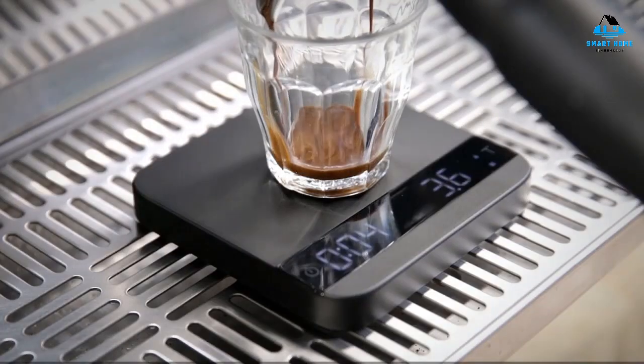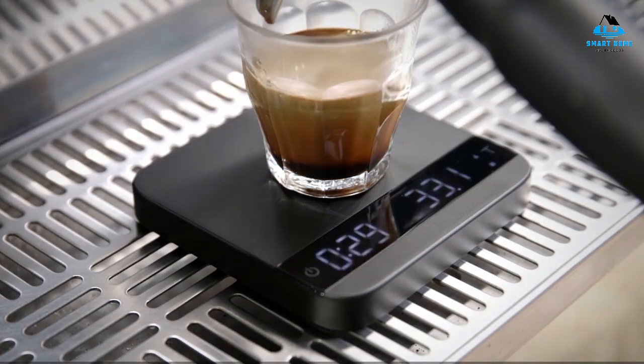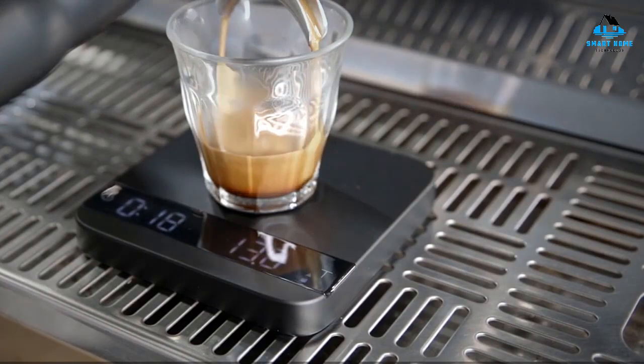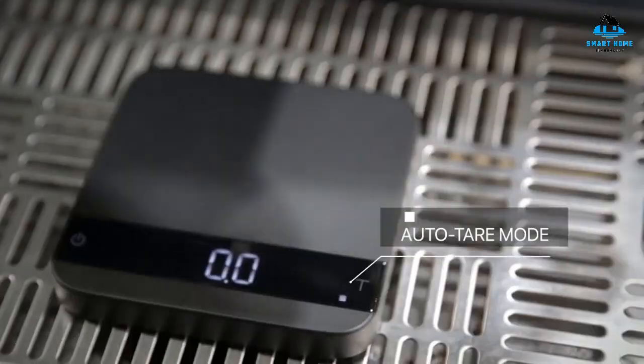The Acaia Lunar is available in black, white, and silver, and comes with a two-year manufacturer's warranty, which you probably want given its high price tag.